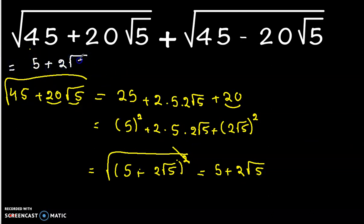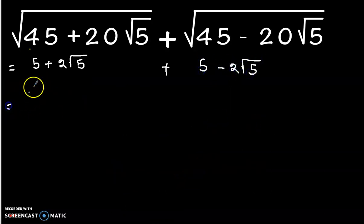So now we have 5 + 2√5, and here it is the same but we have minus, so we will get at the end 5 - 2√5. So plus 5 - 2√5 equals now 5 + 5 = 10, plus 2√5 minus 2√5 cancel, so 10 is our final answer.